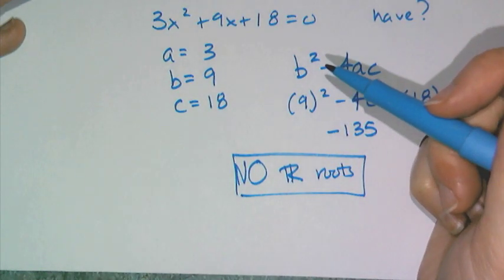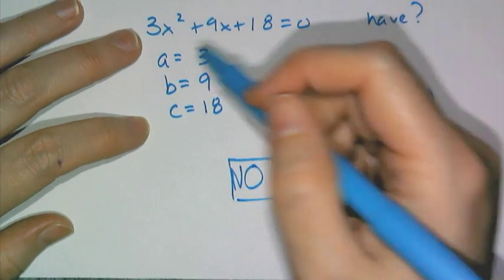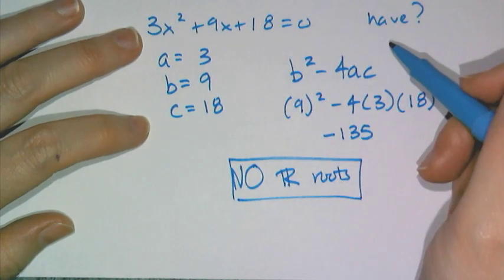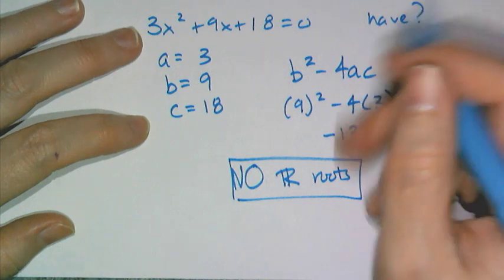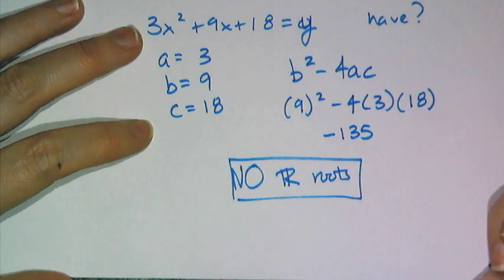Now, the thing about this is, if you have a graphing calculator, and I ask you what kind of roots does this equation have, then you replace that 0 with a y equals and you graph it, and you look and see how many x-intercepts it has.